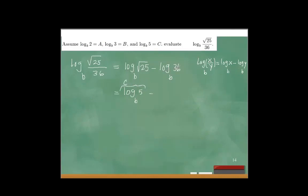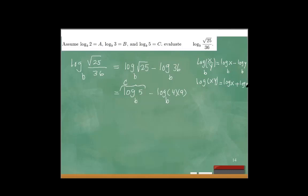I need to write 36 as factors of 2, 3, and 5. Now 36 is the same as 4 times 9. So let's write it as log base B of 4 times 9. Since the argument is a product, log(x·y) = log x + log y, so I can write this as log base B of 4 plus log base B of 9.